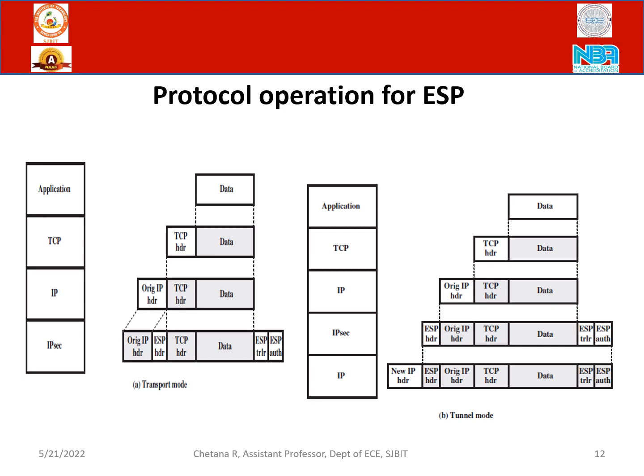In tunnel mode: the data has a TCP header added at the TCP layer. At the IP layer, the original IP header is added. At the IP security layer, the ESP header takes the lead — it comes before the original IP header — with the ESP trailer at the end and ESP authentication at the last. Then, in the IP security layer, a new IP header is appended. All these security layers are added up in order to protect the information.